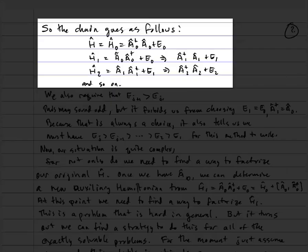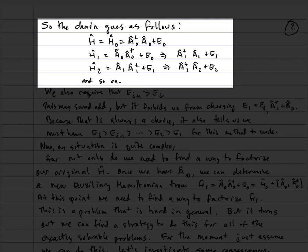The chain goes as follows. We start with H = H₀ = a₀†a₀ + e₀. We form h₁ from a₀ a₀† + e₀, then refactorize that into a₁†a₁ + e₁. We then form h₂ as a₁ a₁† + e₁, and find a refactorization as a₂†a₂ + e₂, and so on.